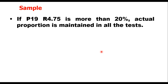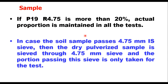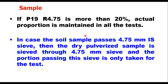If the fraction passing 19 mm but retained on 4.75 mm sieve is more than 20%, then the actual proportion is maintained in all the tests. The fraction retained on 19 mm sieve is not used in the proctor test. If the soil sample passes the 4.75 mm sieve — which is normally the case — the dry pulverized sample is sieved through 4.75 mm and only the passing portion is taken for testing.